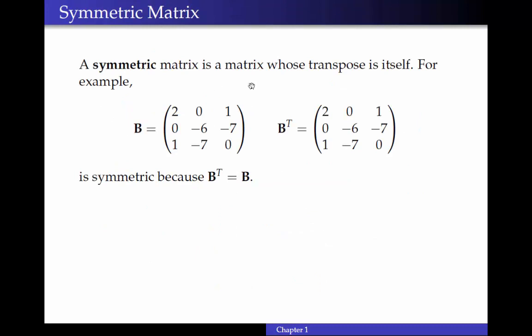A symmetric matrix is a matrix whose transpose is equal to itself. For example, I have this matrix B. B is 3 by 3, and if I take the first row of B and turn it into a column, and the second row and turn it into a column, I can see that I'm actually recreating the same matrix over again, because the first row is equal to the first column, and the second row is equal to the second column, and so forth. So this matrix is symmetric because the transpose is equal to itself.